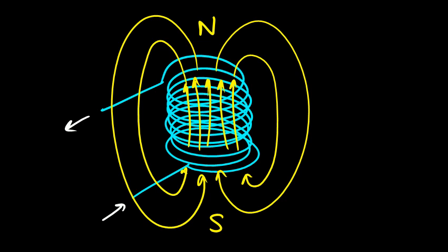It turns out that it won't be all that strong if you just make loops of wire — it depends on how many loops there are and how much current there is. If you put a lot of wire there and really turn up the voltage you'll get a stronger magnet, but there's something you can do to make the magnet really strong: put a piece of iron inside the loop.